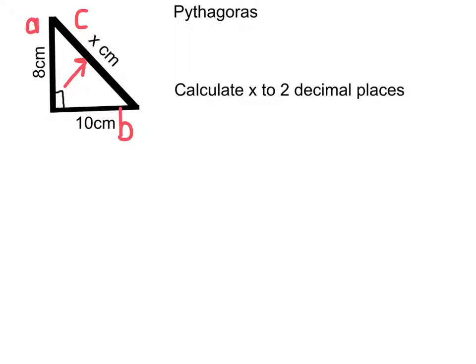And Pythagoras, our first line of our working, his theorem was that c squared, the long side squared, is equal to the short side squared plus the other short side squared.